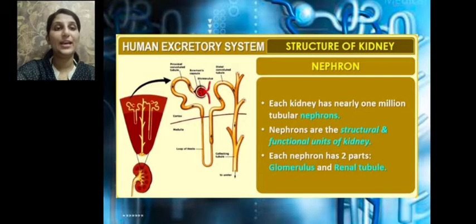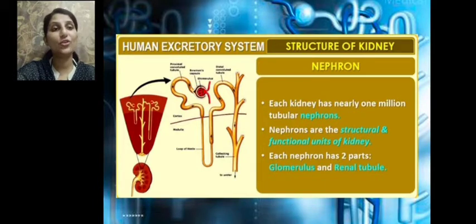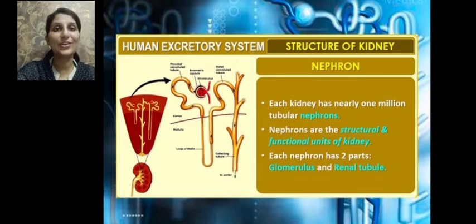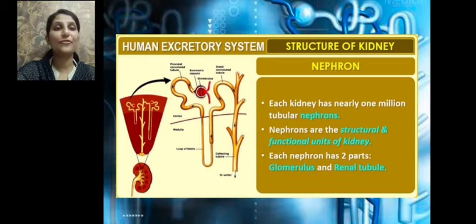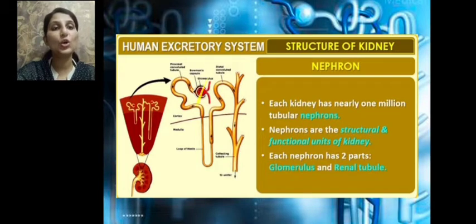Each kidney is made up of one million tubular structural and functional units called nephrons. Nephrons are the structural and functional units of the kidney, and each nephron is divided into two parts: the glomerulus and the renal tubule.